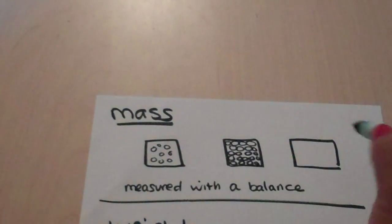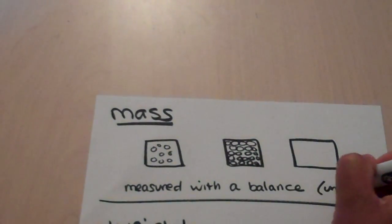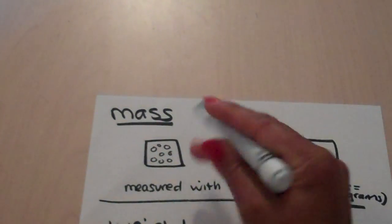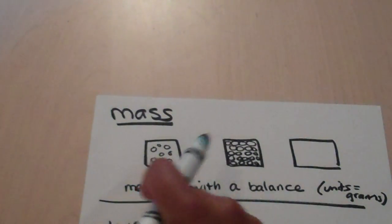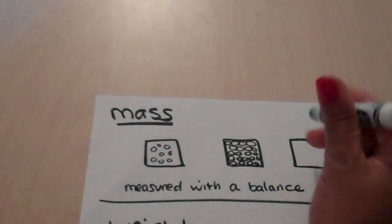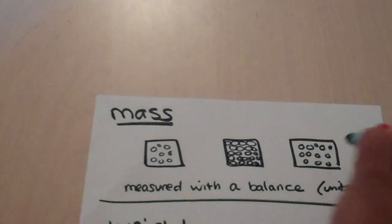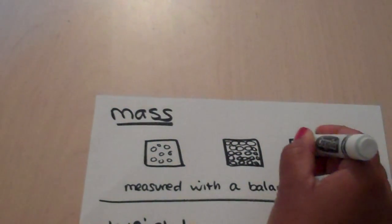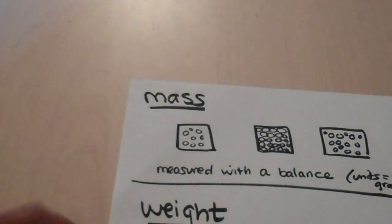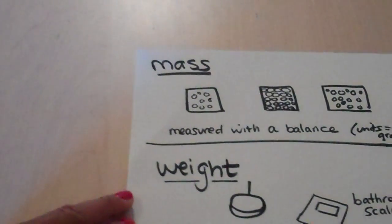And we measure this with a balance, and the units we use in science class is done in grams. Now a question for you, this one would be low mass, this is high mass, what would this one be? Just jot that down, what do you think?